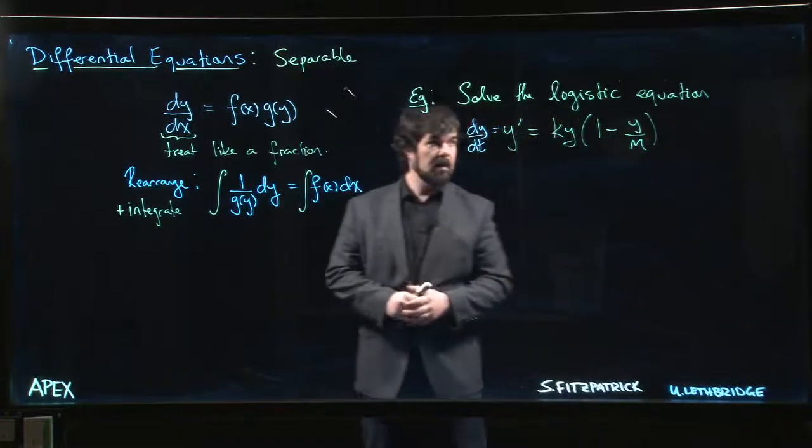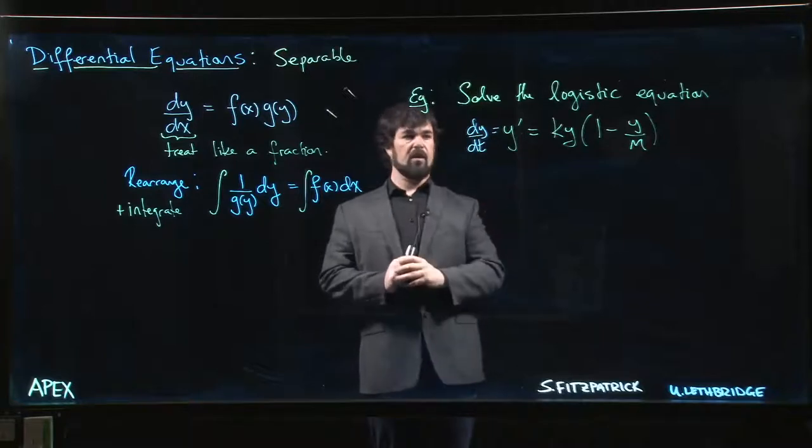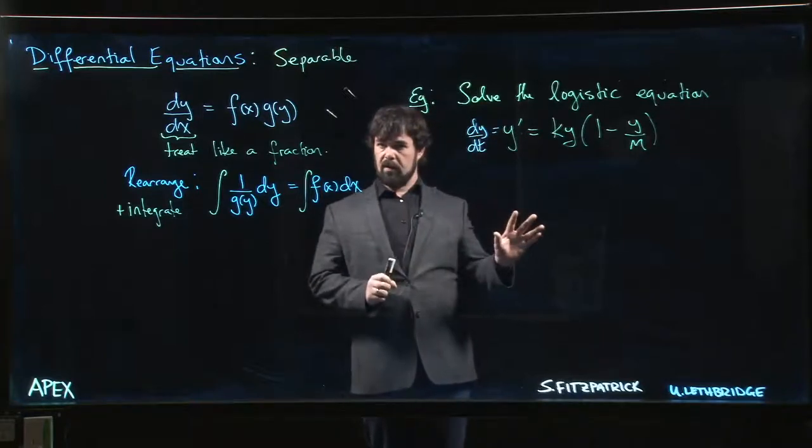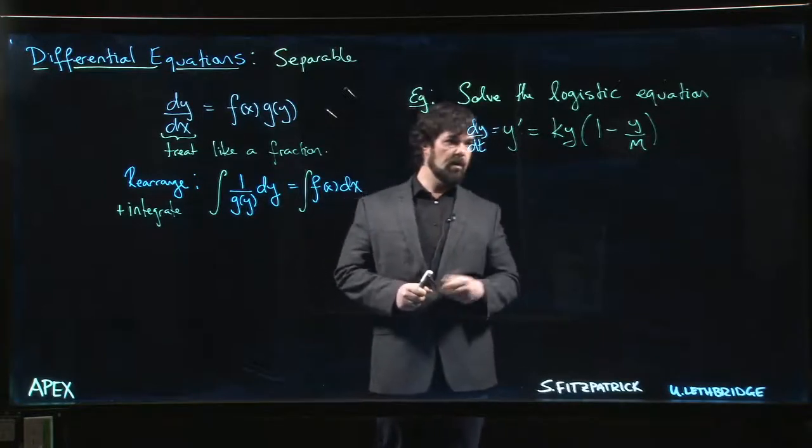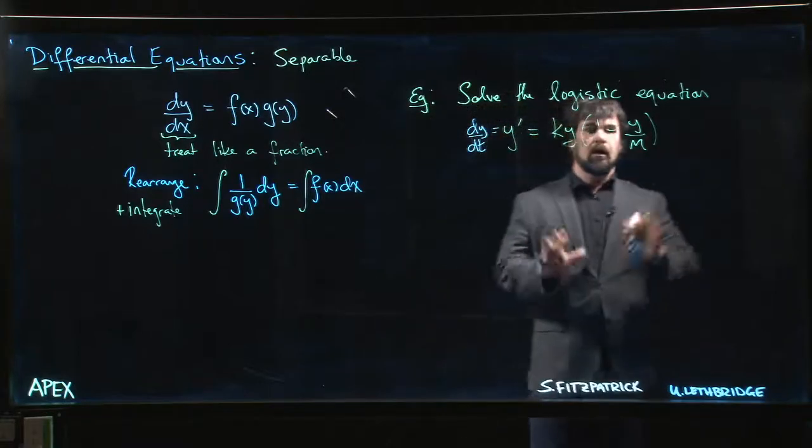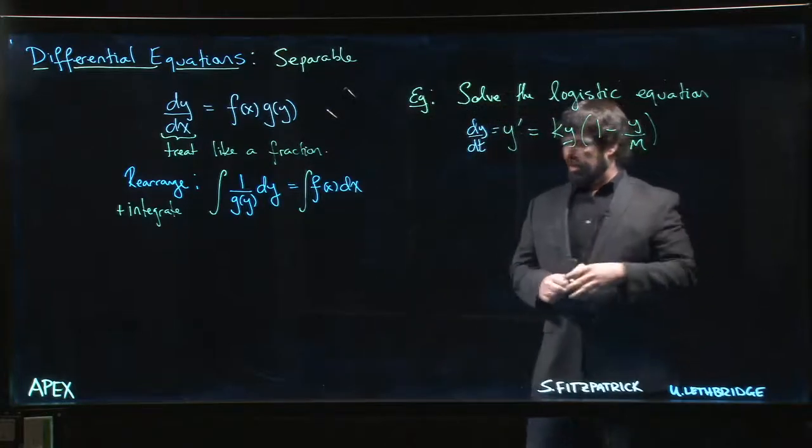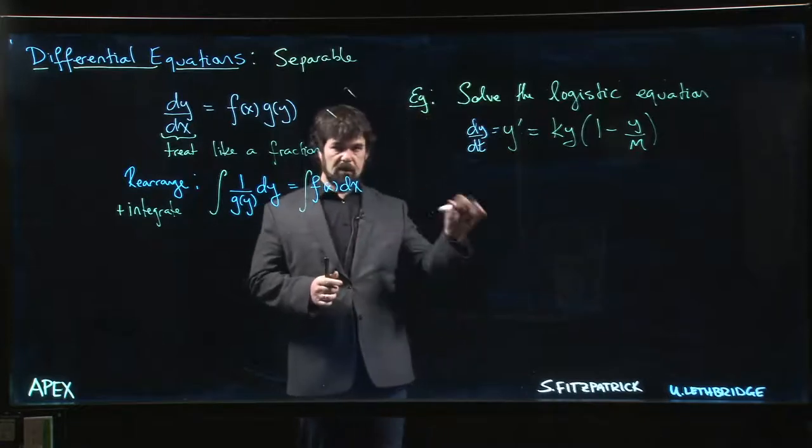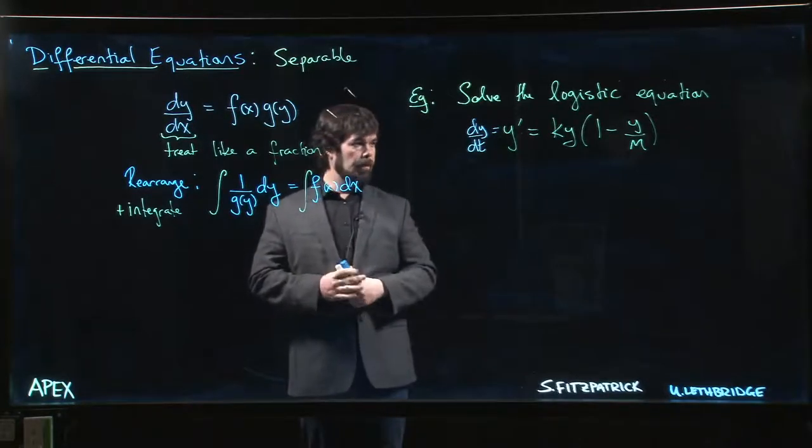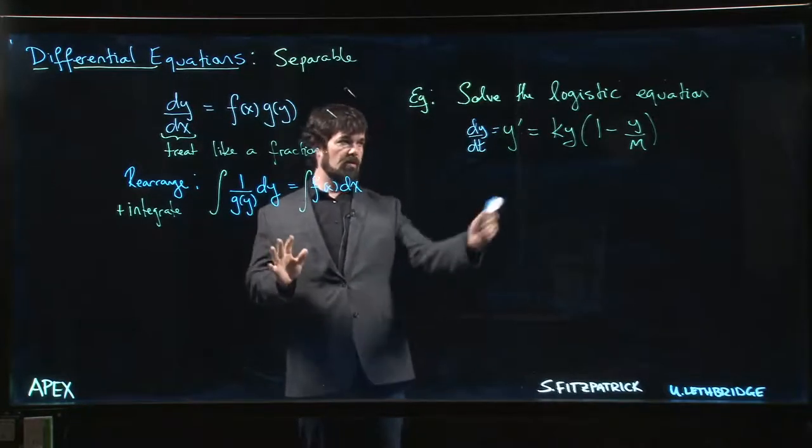So the last separable equation we're going to look at is called the logistic equation. You might have already looked at this one in the first section of the chapter. There we kind of looked at it in terms of slope fields. We didn't do a video on that, we didn't do videos for the slope field stuff, but if you've read through the text you've already had a little look at this equation.